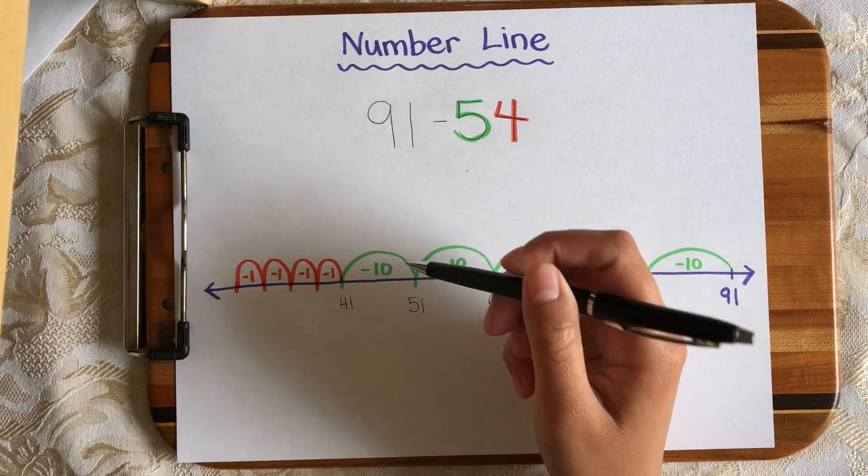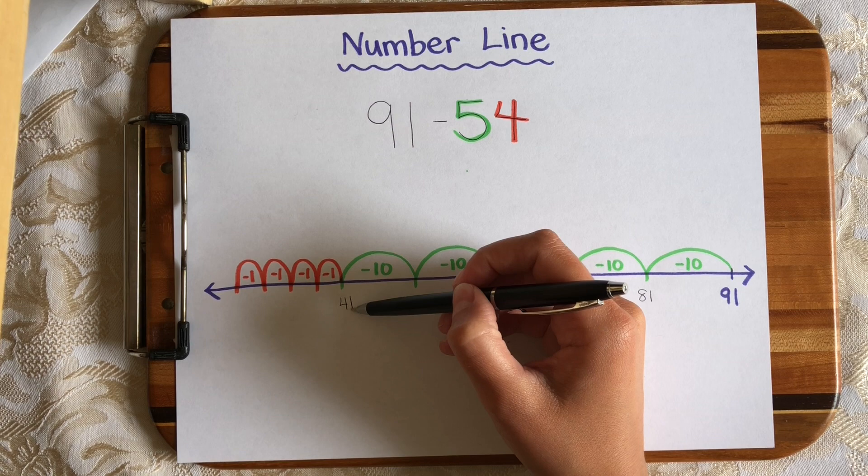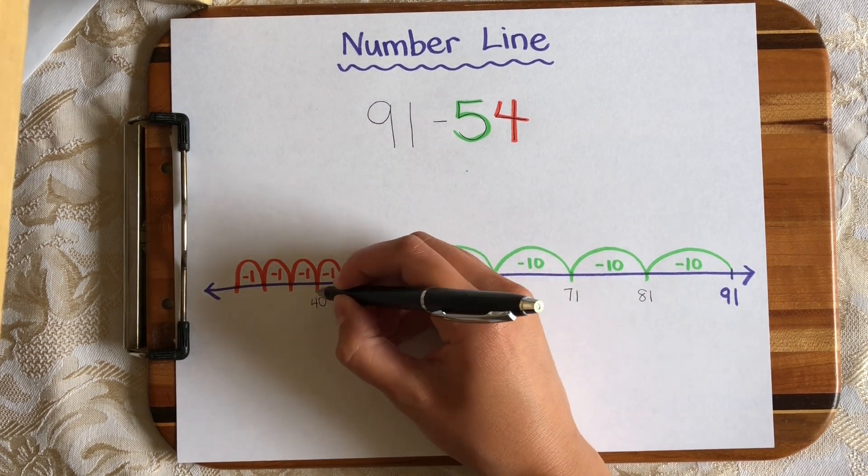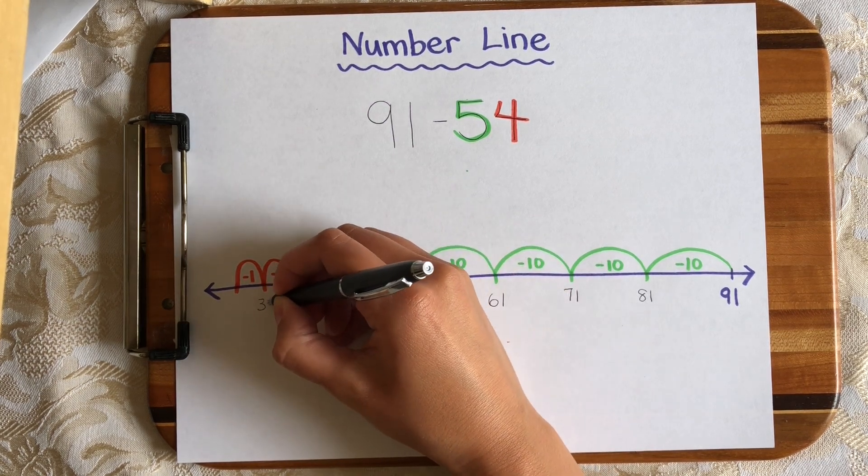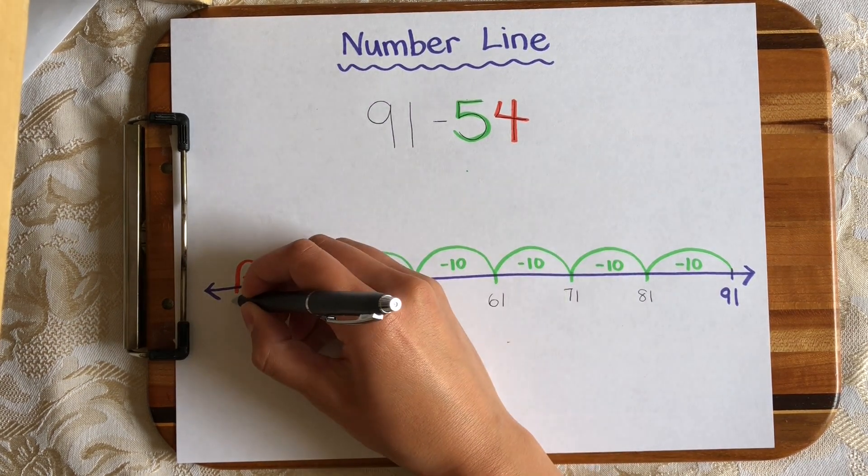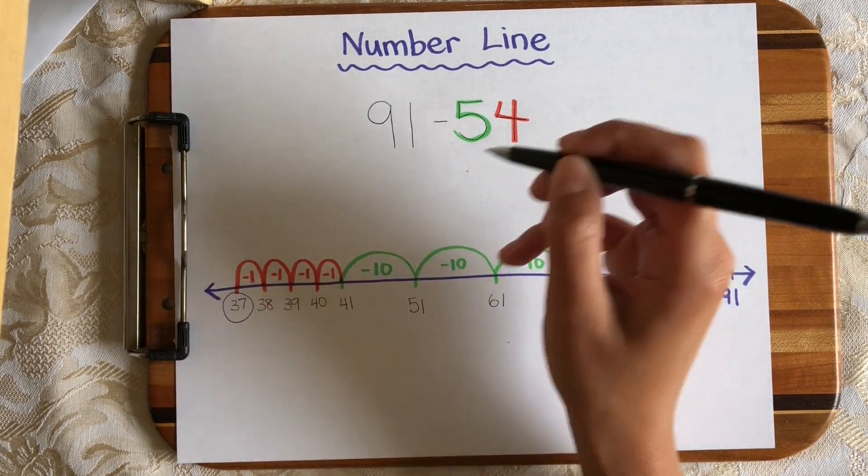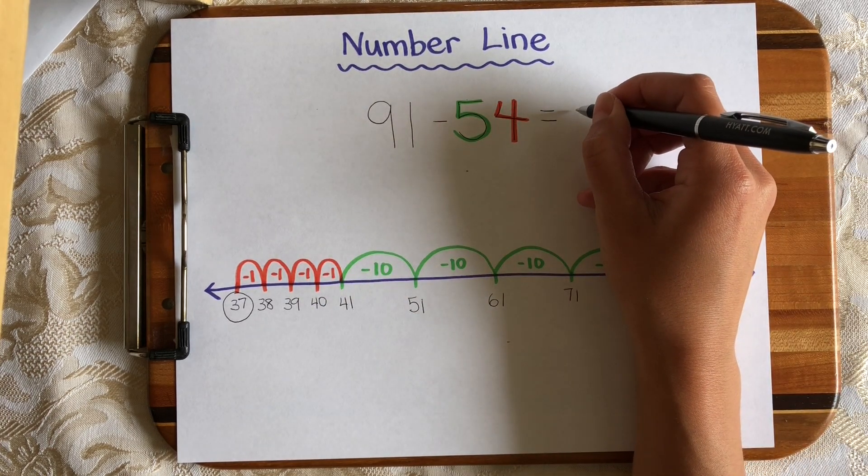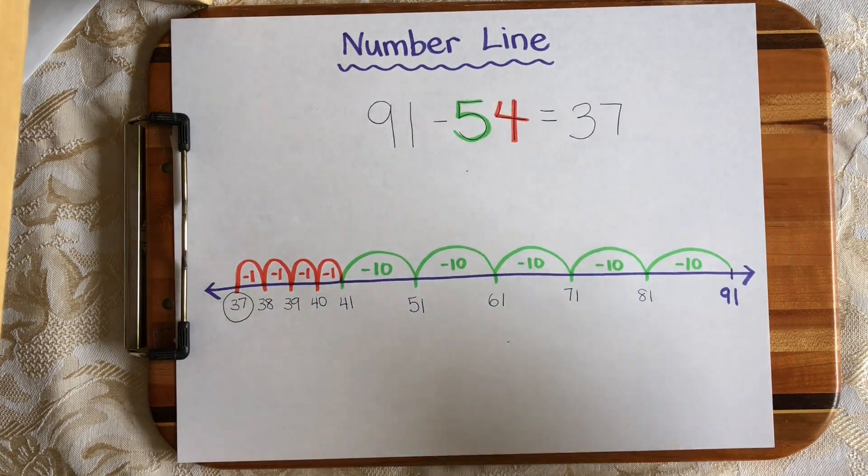Now I need to be really extra careful because I'm subtracting 1 instead of 10. So if we start at 41 and we subtract 1, that gets us to 40, subtract 1 again, 39, subtract 1 again, 38, and lastly, subtract 1 one more time to get us to 37, which is the difference between 91 and 54. So that means 91 minus 54 equals 37.